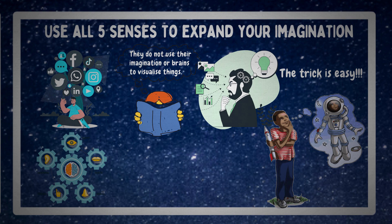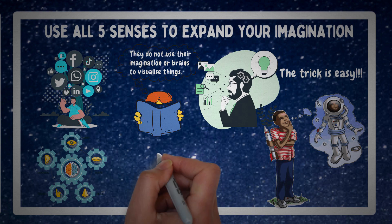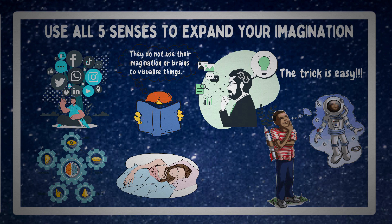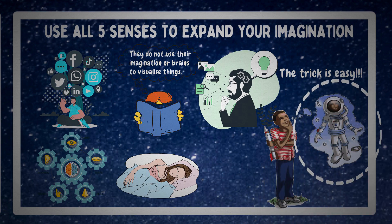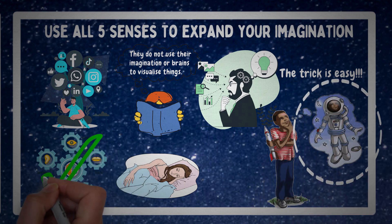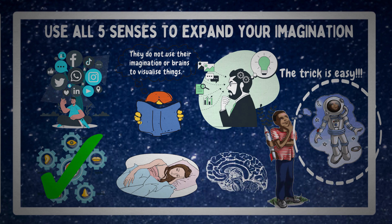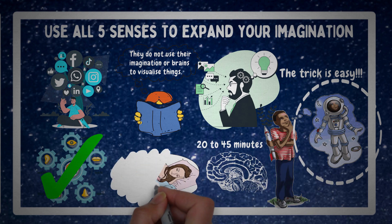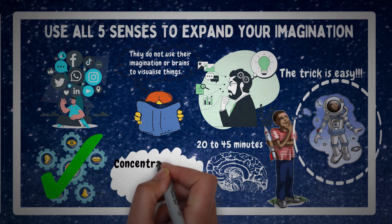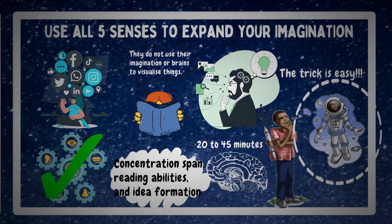The trick is easy — you just need to daydream. When you dream at night while asleep, all five of your senses are active and you feel as if everything is happening for real. In the same way, you have to dream during the day while being conscious. Imagine something you really desire and try to feel it with all of your five senses. This activates all sections of your brain and they all operate together at the same time. Repeat this exercise for 20 to 45 minutes every day to improve your concentration span, reading abilities, and idea formation.